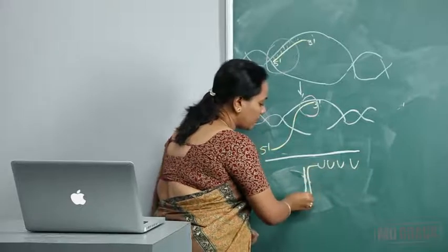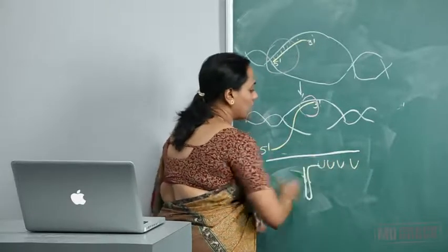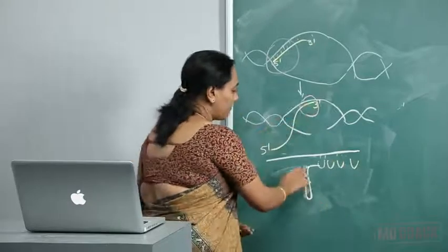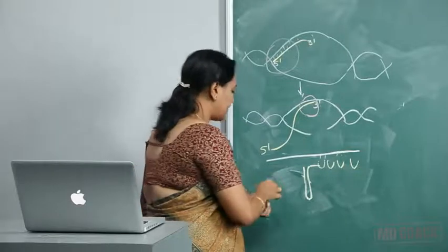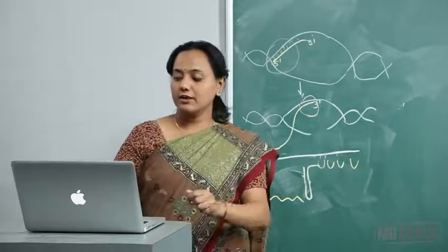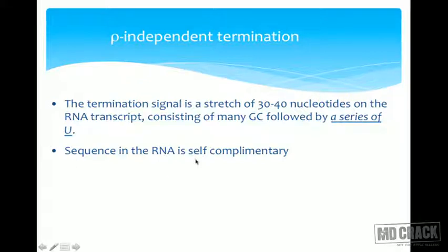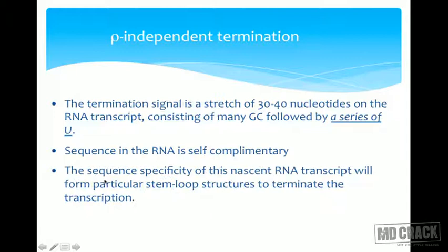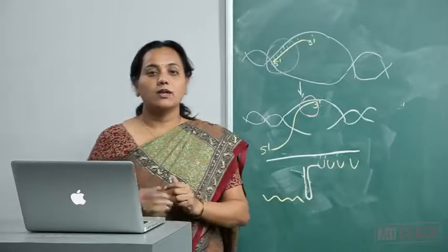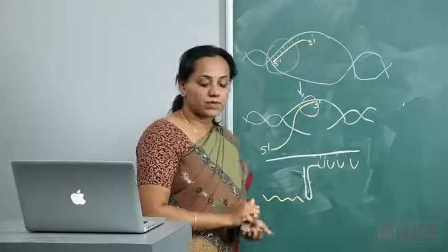The A-U base pairing has only two hydrogen bonds, so it can separate out. The GC pairing pulls the transcript, resulting in the transcript coming out of the DNA — the DNA-RNA hybrid releases. The sequence in the nascent RNA transcript is self-complementary, forming a stem-loop structure that terminates transcription. These are called hairpin structures and result in rho-independent termination.